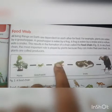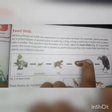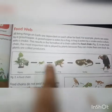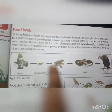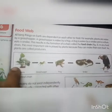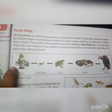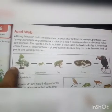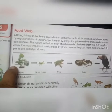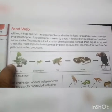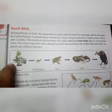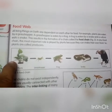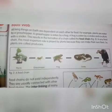A frog is eaten by a snake, and a vulture eats a snake. This results in the formation of a chain called the food chain. In any food chain, the most important role is played by plants, because they can make their own food. So plants are called producers.